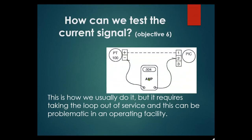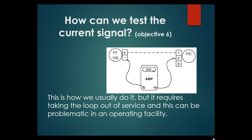Objective six — how to test the current signal: normally we put the ammeter in series, but that breaks the loop and can cause process problems. When doing calibrations we use this method because we cannot calibrate a live loop — it gives errors. In the field, if you're working on a loop, always tell operators you're going to work on it, put it in manual, then calibrate. Opening the loop requires taking it out of service, which can be problematic in an operating facility.